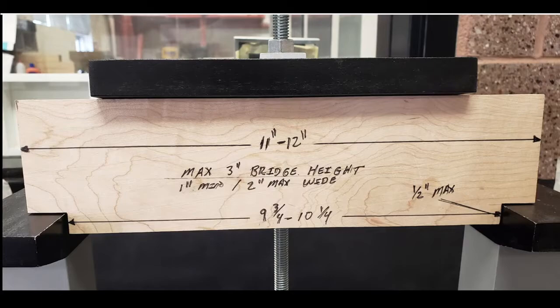But if you look at that bottom measurement, it says 9 and 3/4 to 10 and 1/4. The two platforms that your bridge will sit on are somewhere between 9 3/4 at the smallest and 10 1/4 at the largest. We can slide those a little bit - that's a half inch - to adjust them to fit your particular bridge.